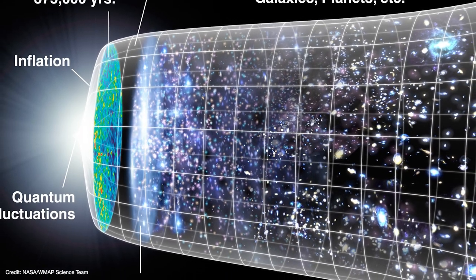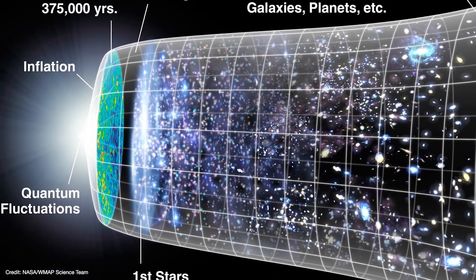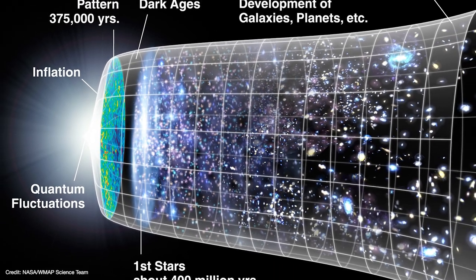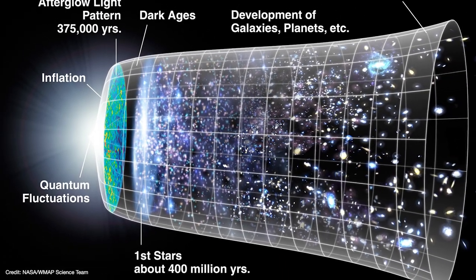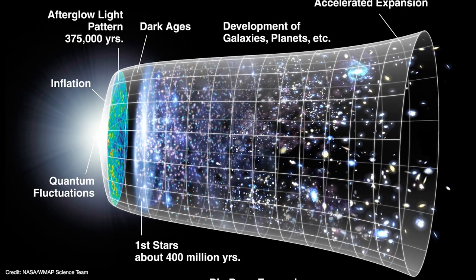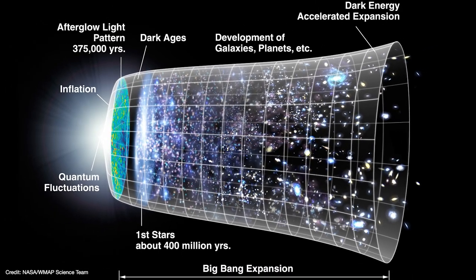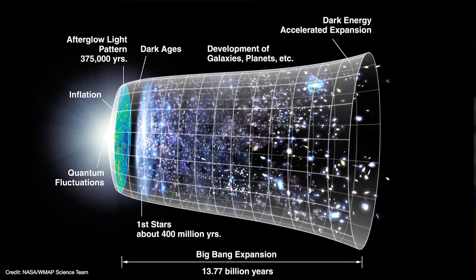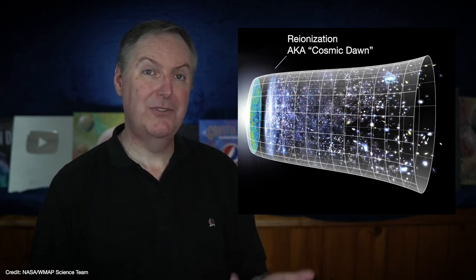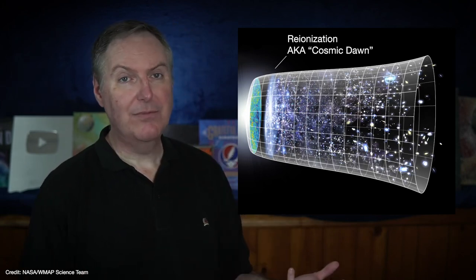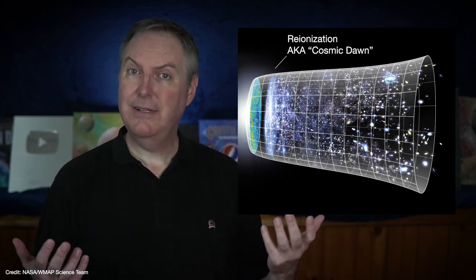Now by early universe, we're talking about a time frame starting around 400 million years after the big bang. Our best understanding is that that was the time when the universe cooled enough for matter to clump together to form the first stars. And those first stars would have been ionizing the surrounding hydrogen and helium gas. And that's why this epoch is alternately referred to as the epoch of reionization or the cosmic dawn.